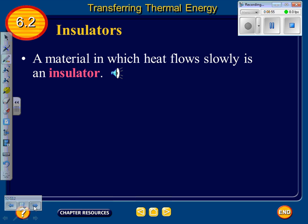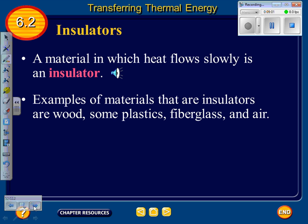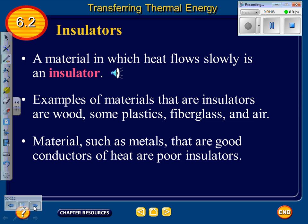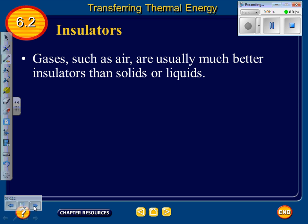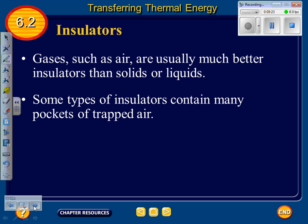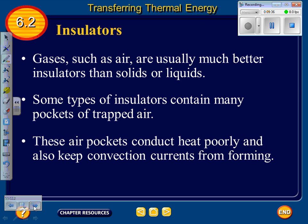Insulators: a material in which heat flows slowly is an insulator. Examples include wood, some plastics, fiberglass, and air. Materials such as metals that are good conductors of heat are poor insulators. Gases such as air are usually much better insulators than solids or liquids. Some types of insulators contain many pockets of trapped air — like long underwear, which has little pockets built in to trap air. These air pockets conduct heat poorly and also keep convection currents from forming.